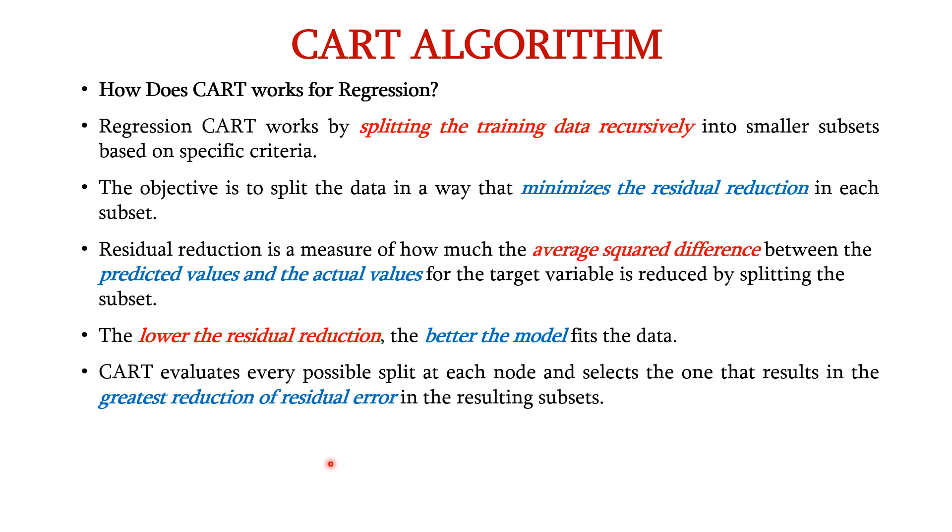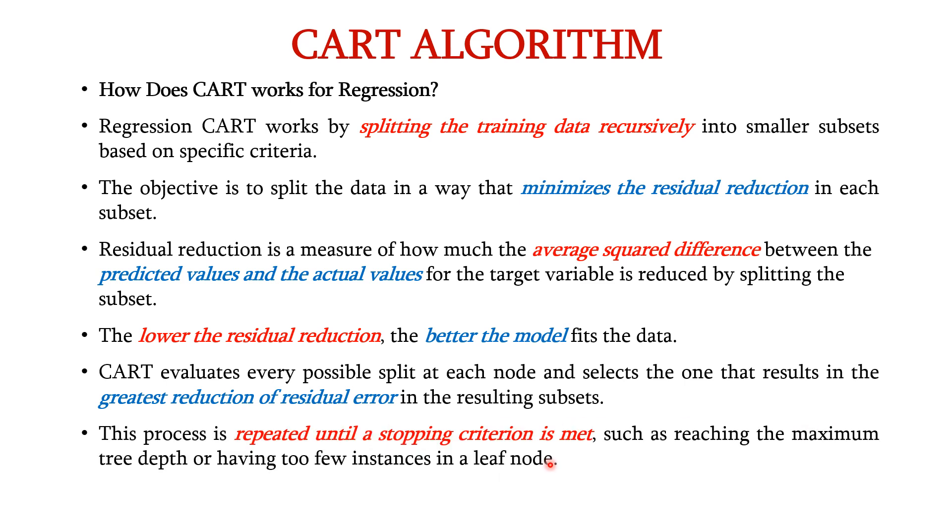CART evaluates every possible split at each node and selects the one that results in the greatest reduction of residual error in the resulting subsets. This process is repeated until a stopping criterion is met, similar to the classification task. The stopping criterion can be reaching the maximum tree depth or having too few instances in a leaf node.